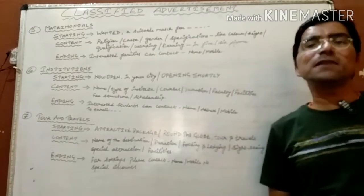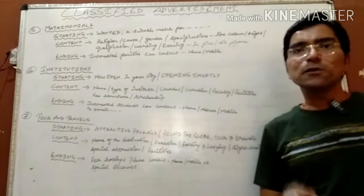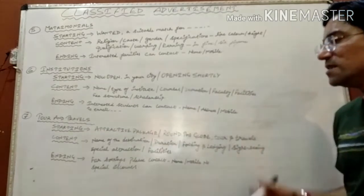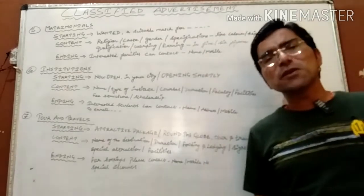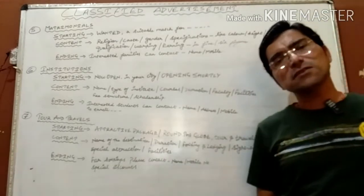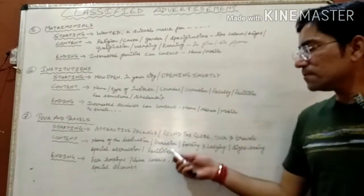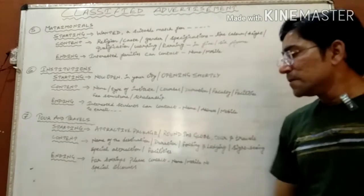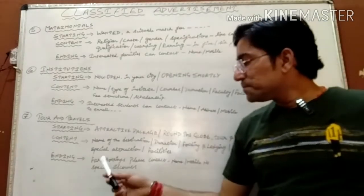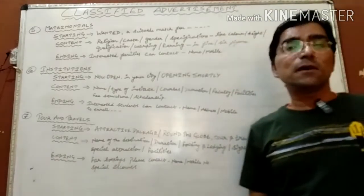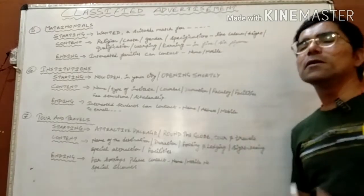Then include sightseeing — the special, famous places of that destination where tourists will be taken — and special attractions, which can be historical places or other renowned spots. Also mention extra facilities, such as providing a guide for the whole trip. The ending is: 'For bookings, please contact [name] and [mobile number].' You can also mention a group discount offered when a group books the tour together.